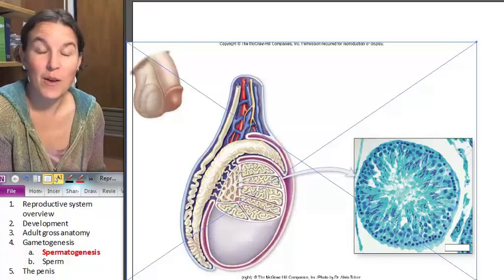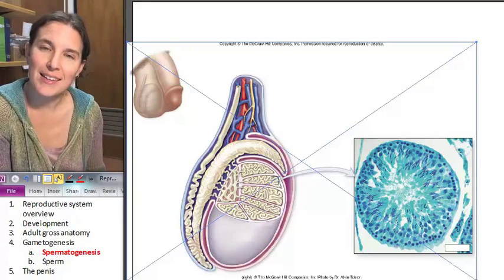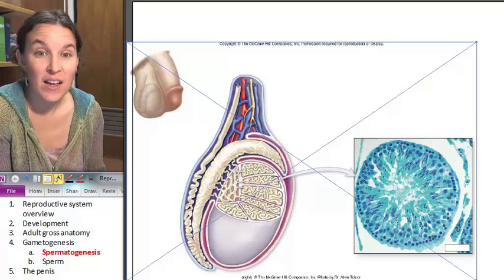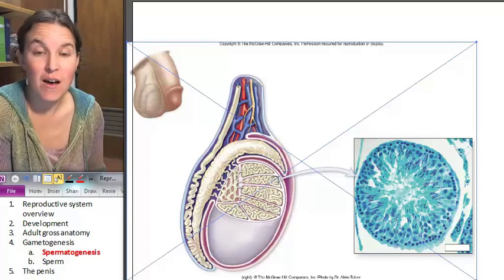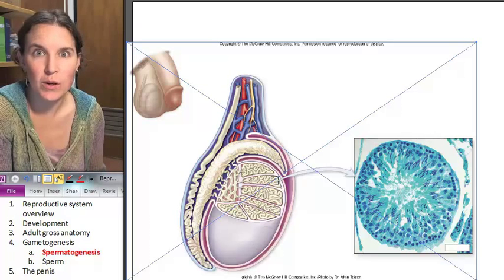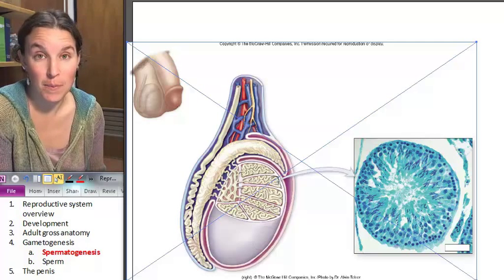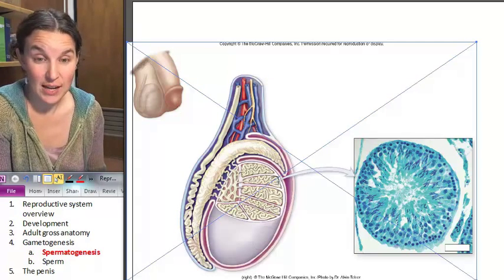So let's make sperm. Where do they get made? In the testes. Now, I have a view of the testes for you because I care. Look at that. We chopped this testy up so that we could see inside of it.